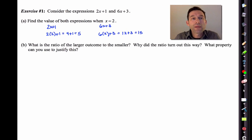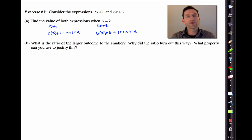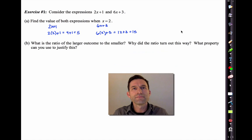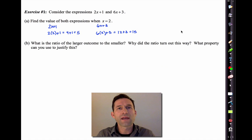Alright, fine. Well, letter B asks us, what is the ratio of the larger outcome to the smaller outcome? Now you should understand ratios. And then it asks, why did the ratio turn out this way and what property could we use to justify all of this? This is a little bit tricky, but if you think you have a good idea about what the ratio is, you should certainly be able to do that. But why it turned out that way, pause the video right now and think about it.